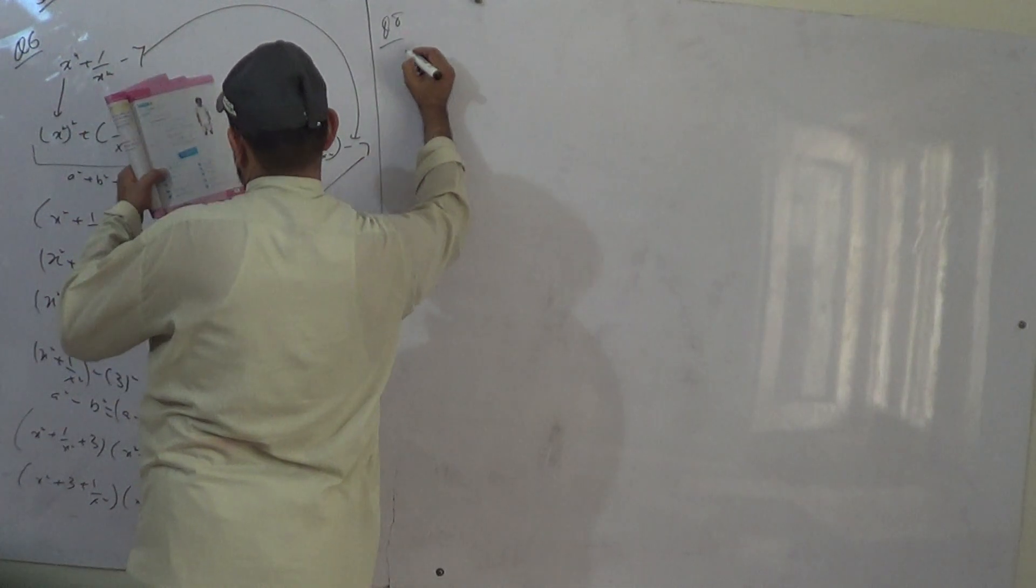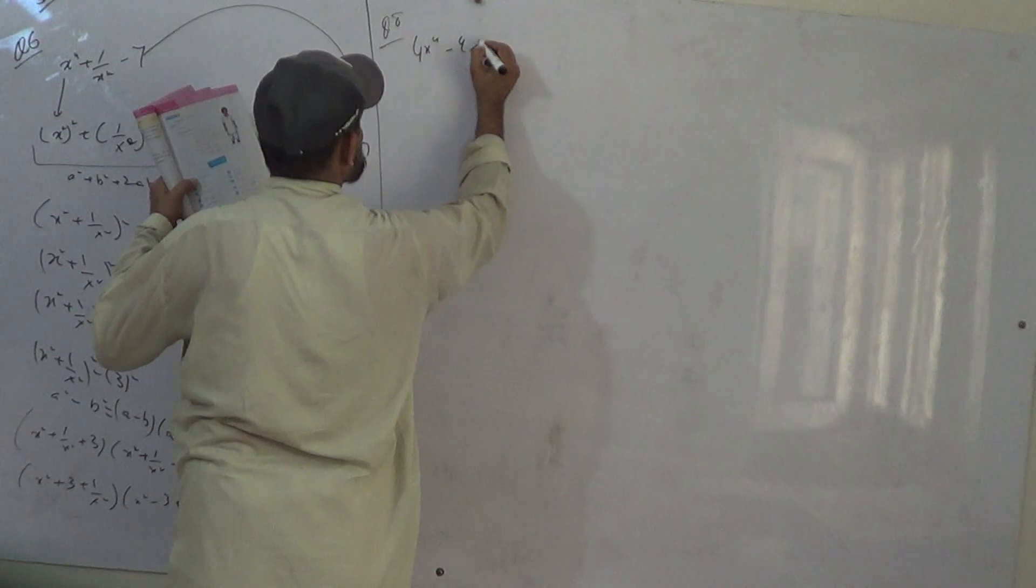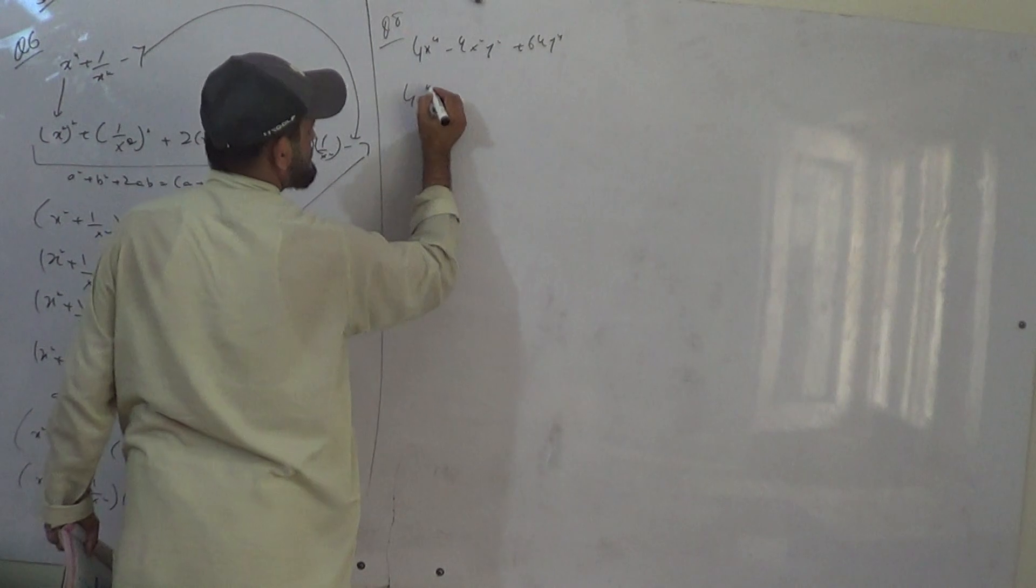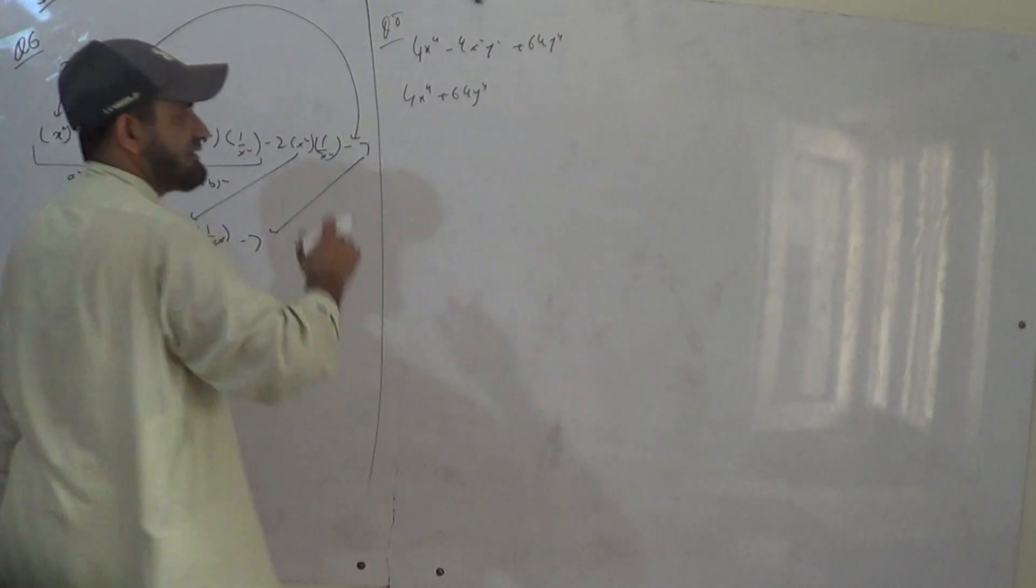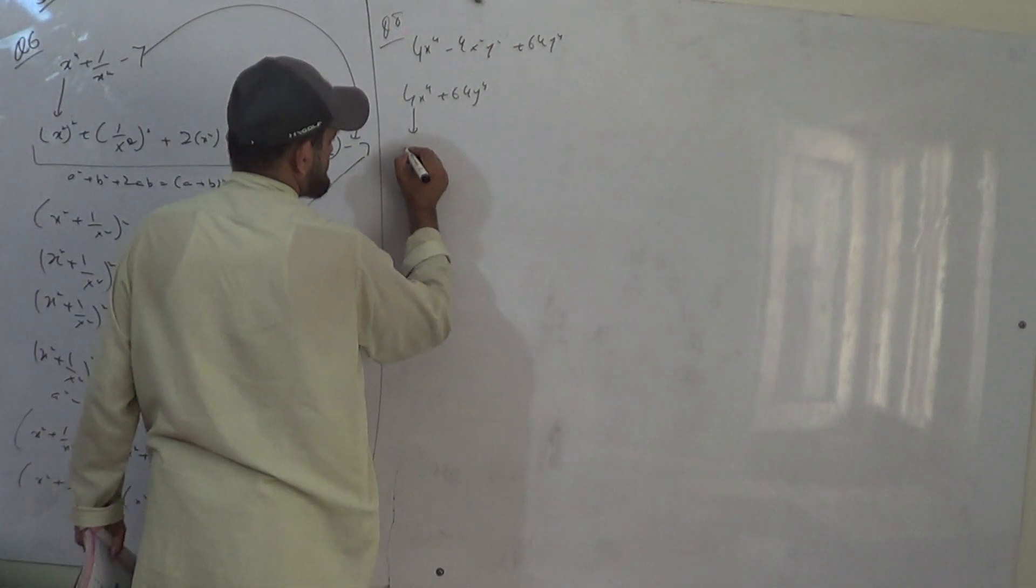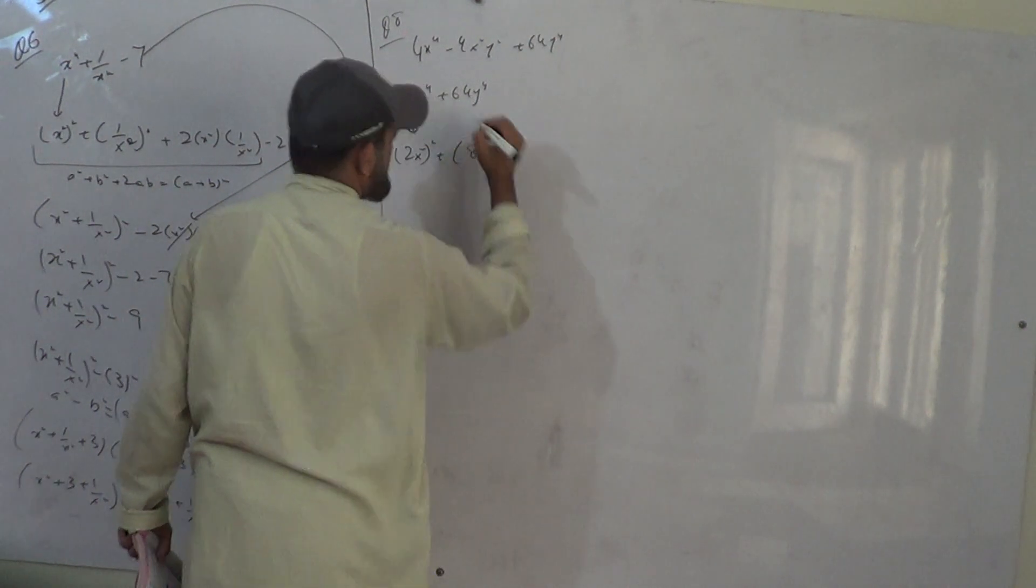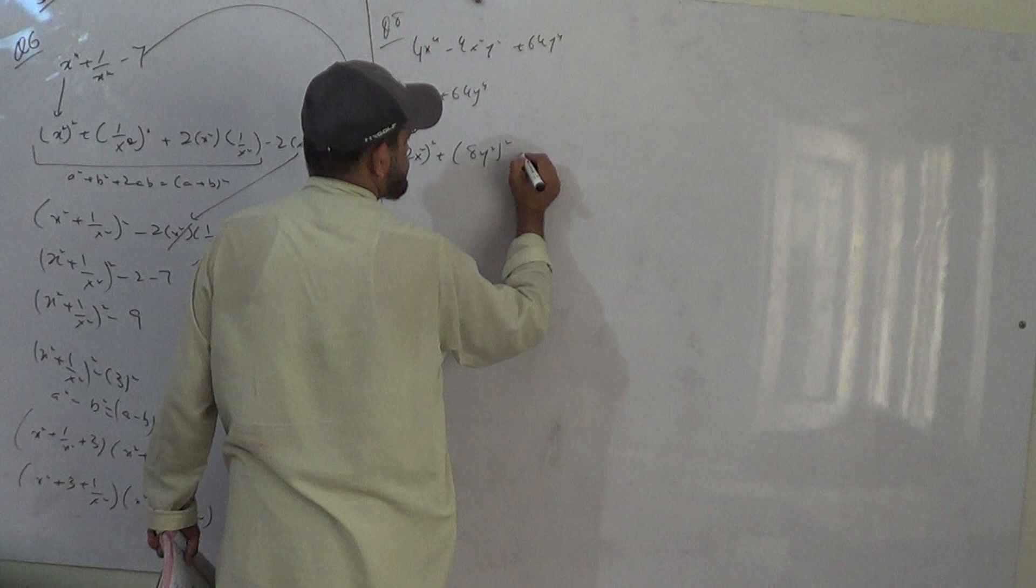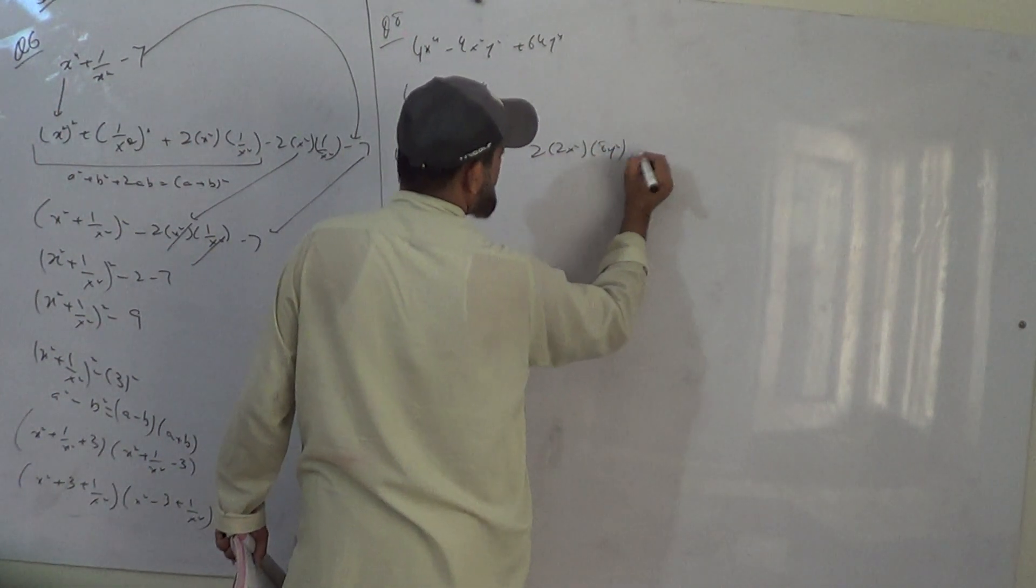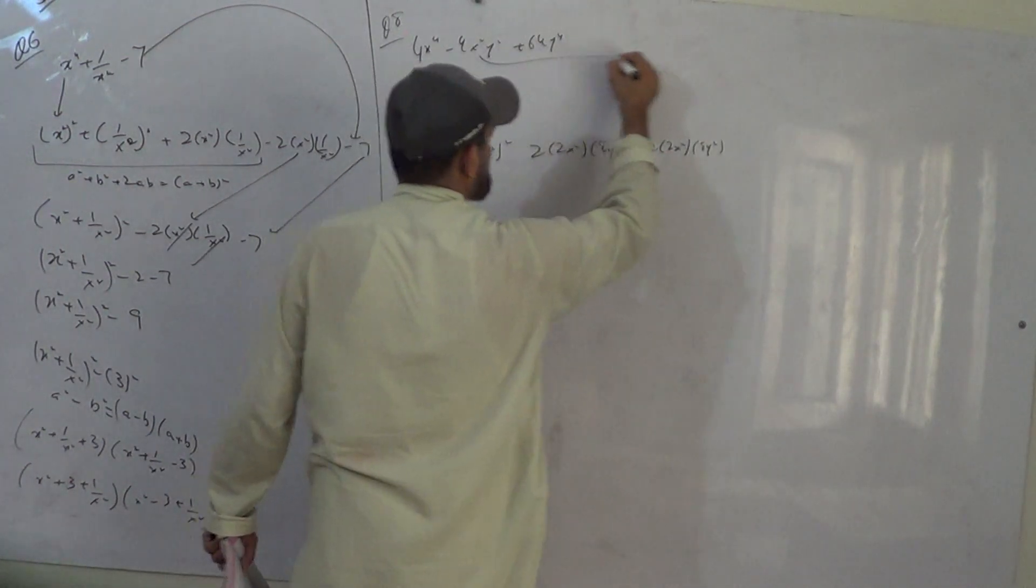Question number 8. 4x to the 4 minus 4x square y square plus 64 by 4. We arrange. Now let's consider, it's not here in the question. It will be a square plus b square. We check it. We write first minus or plus. It will be at the end.